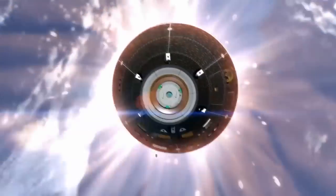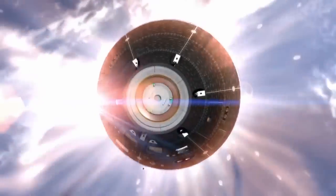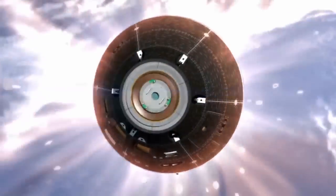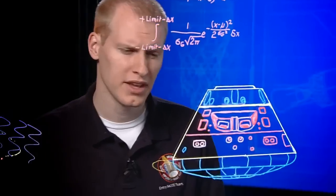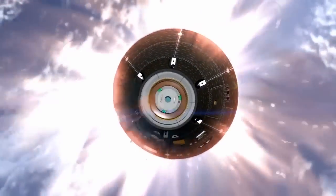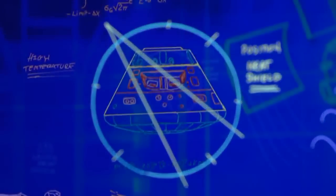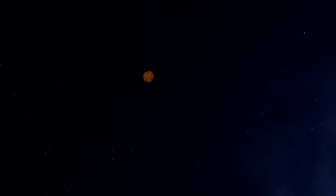Orion is inside a fireball. Onboard systems ignite jets to keep the ship pointed correctly, so the specially constructed heat shield takes the full brunt of the inferno. This is the largest heat shield of its kind ever made. Orion's computers command the spacecraft to bank like an airplane, keeping a precise path to the landing site.